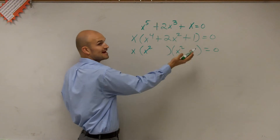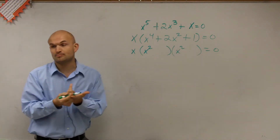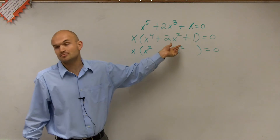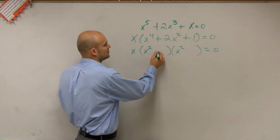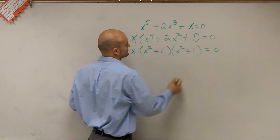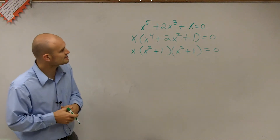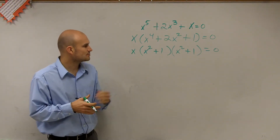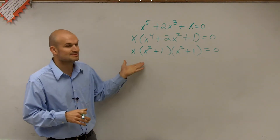The last two numbers have to give me 1, so they have to either be both positive ones or both negative ones. But since they have to add up to a positive 2, I know that they're both going to be plus 1. So this ends up being x times the quantity x squared plus 1 times the quantity x squared plus 1.